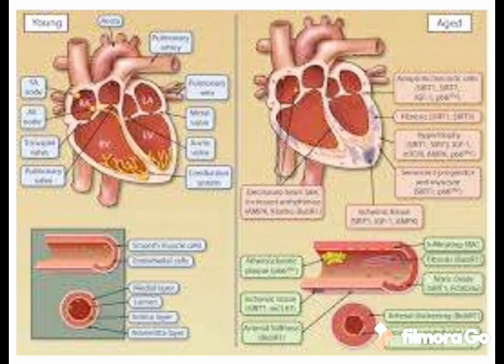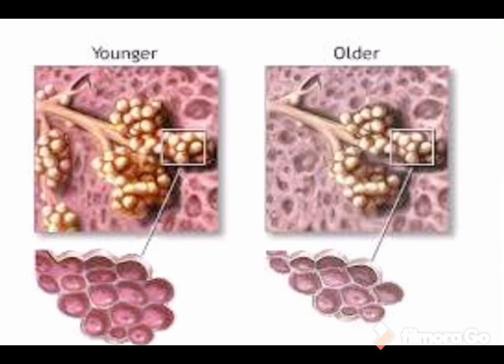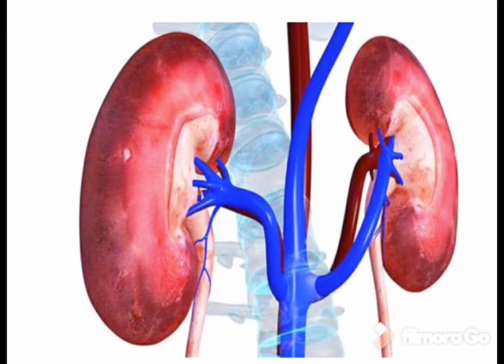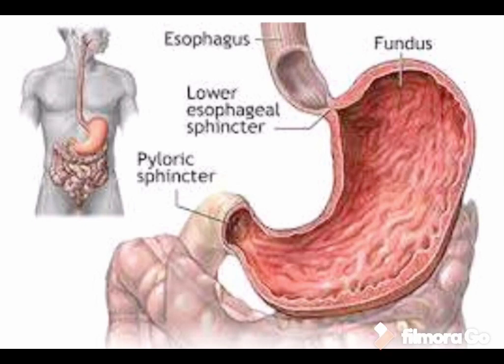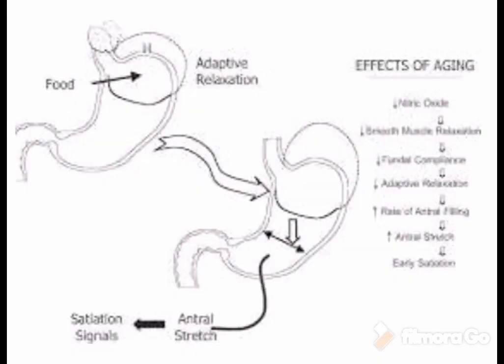Pictures showing the young and older changes in each system are displayed, illustrating what happens in each system very clearly. All these changes are included in the biological aspects of aging. These changes require the individual to adapt their ways and try to cope with their present situations.